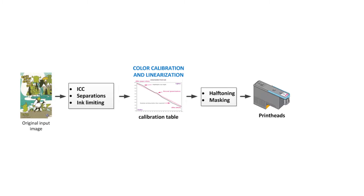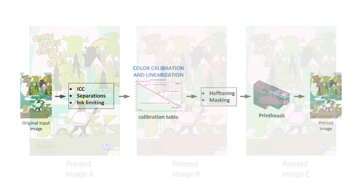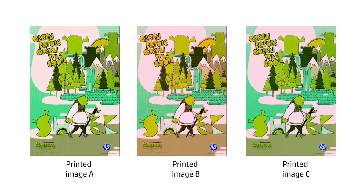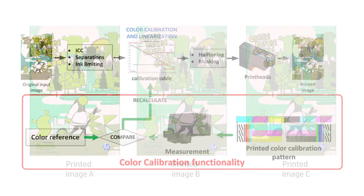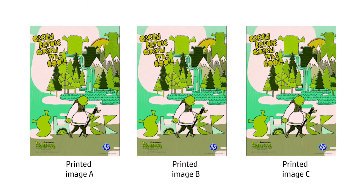When a job is sent to the printer from the software RIP, it goes through the standard colour pipeline before it prints. The printed plot might be different depending on the status of the printheads, inks and substrate. Printhead, ink or media drifts can be compensated at the colour calibration — a linearisation pipeline step — by recalculating the colour table to match a colour reference. This process allows you to get similar prints on different occasions.